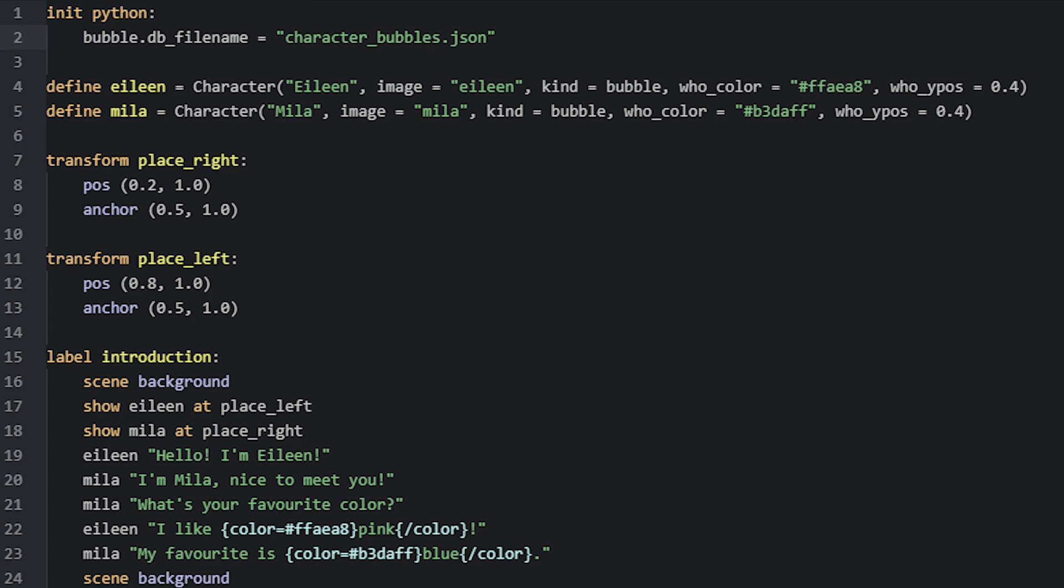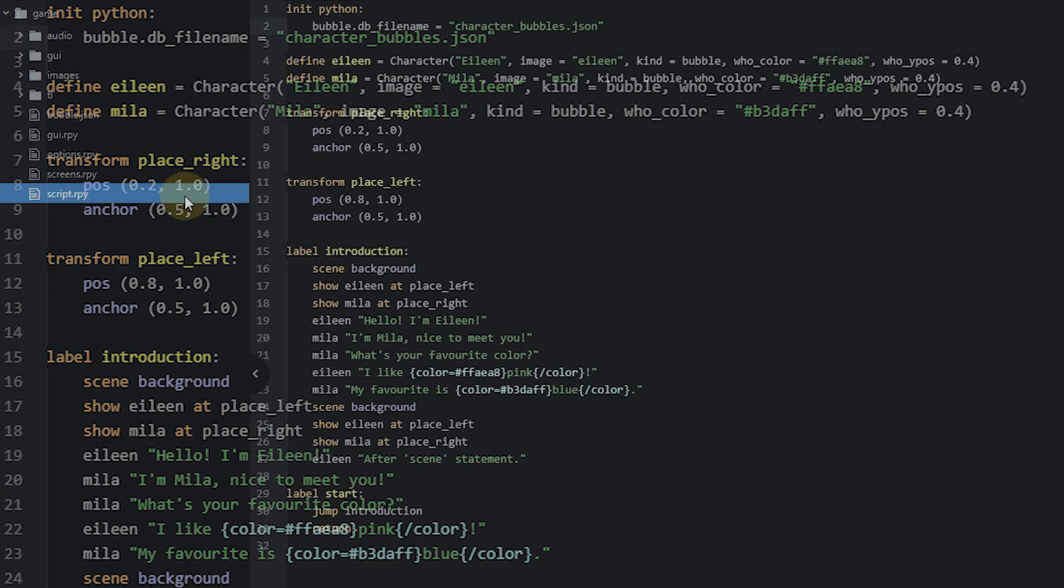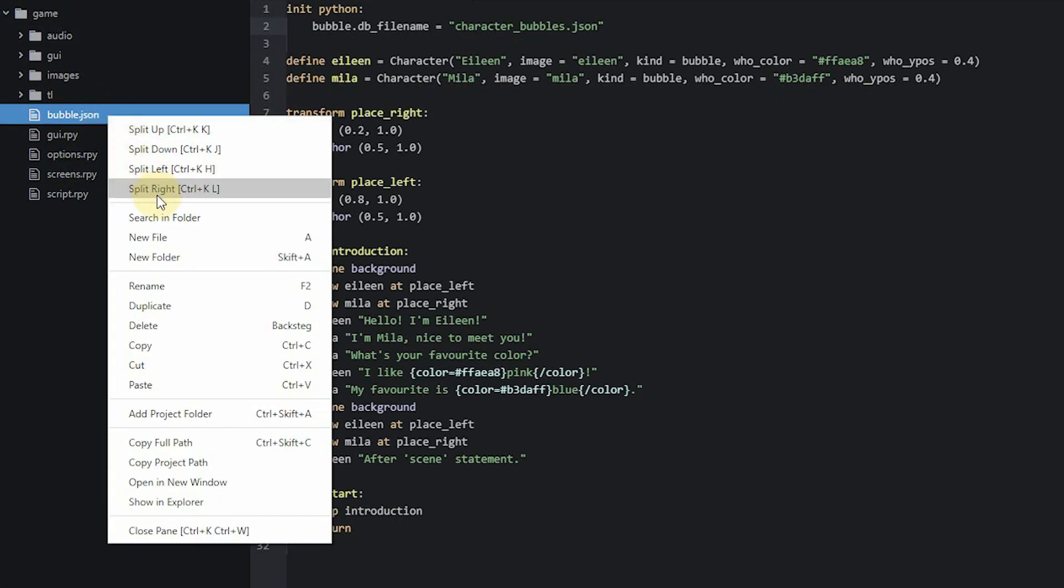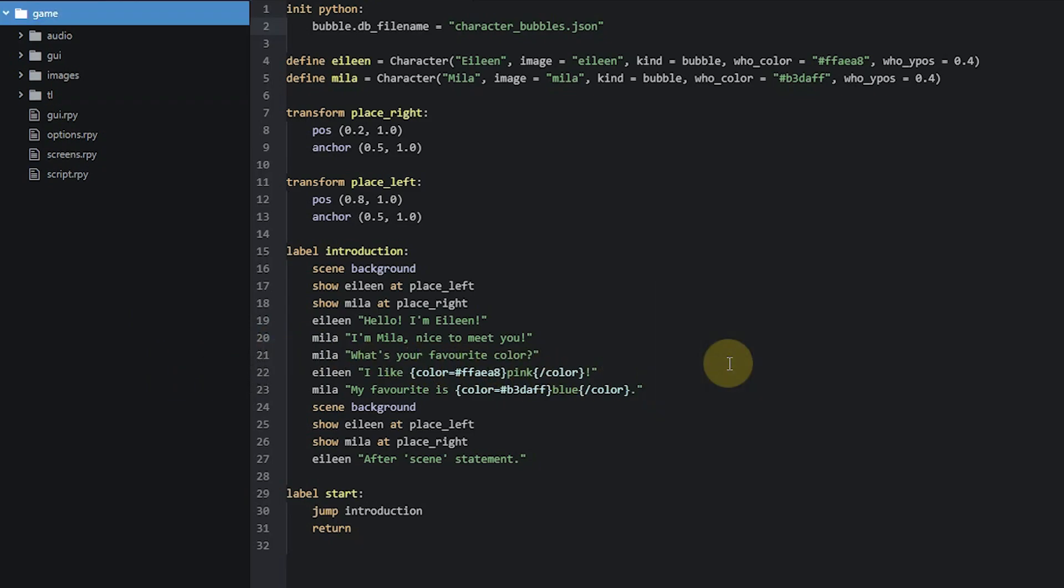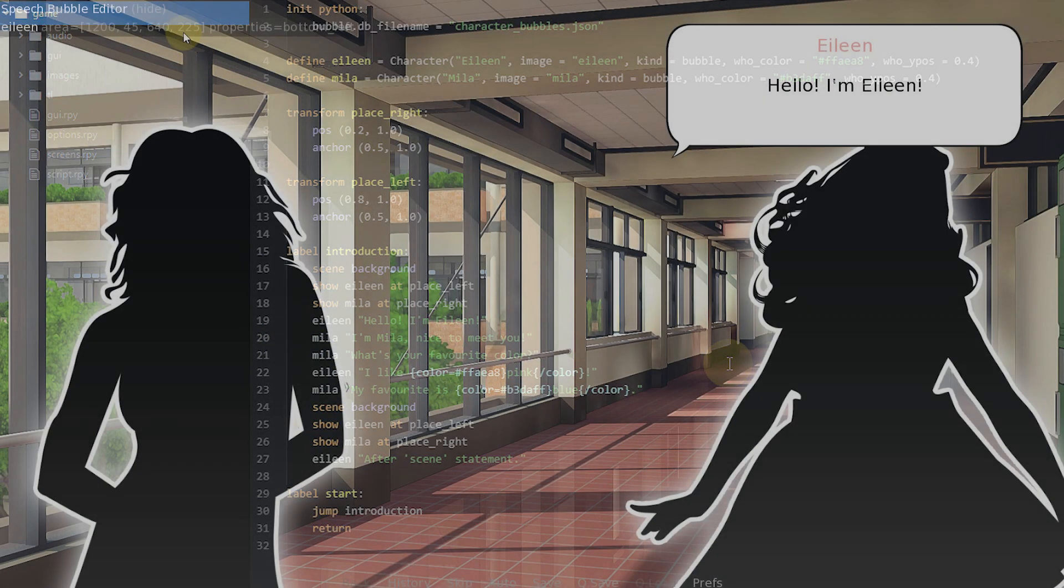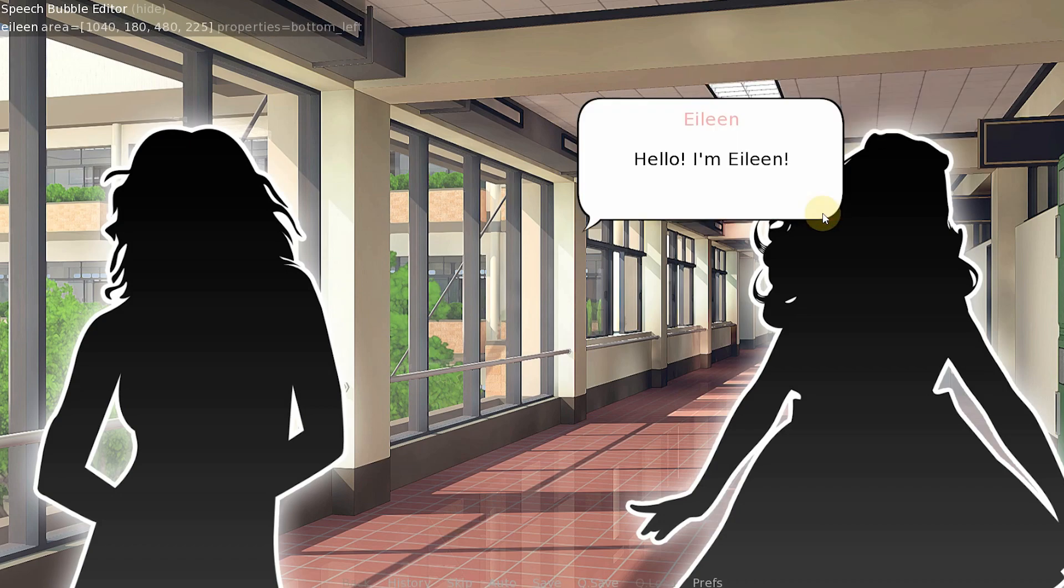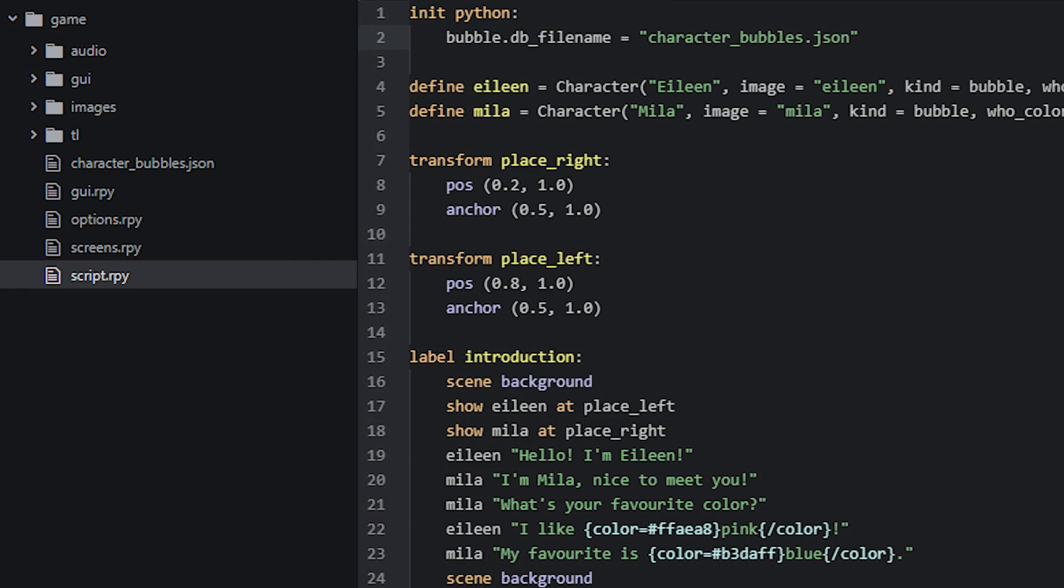And remember to supply the .json after your filename, as it's supposed to be a json file. For this test, I'll go ahead and remove the old file so it can be generated again with the new name. Now if we run the game again, and place at least the first bubble for the first dialog, and then quit the game, we'll see in our project files that the file generated is now called characterbubbles.json.